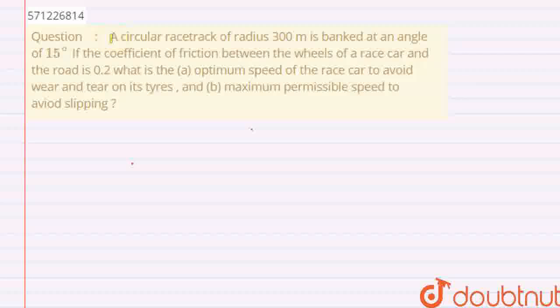Hello friends, welcome to Doubtnet. In this question, there is a circular racetrack of radius 300 meter and is banked at an angle of 15 degree. The coefficient of friction between the wheels of race car and the road is given as 0.2 and the optimum speed of the race car we have to find to avoid wear and tear on its tire. And in the second part, we have to find maximum permissible speed to avoid slipping.